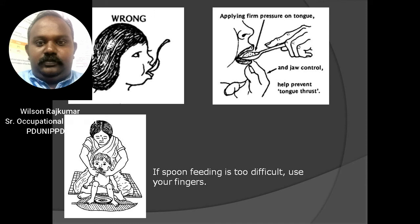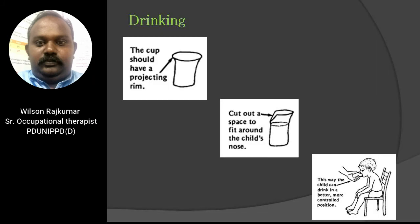Feeding a child from above leads to tongue thrust. Applying firm pressure on the tongue and using jaw control helps prevent tongue thrust. If spoon feeding is too difficult, use fingers to feed the child. To promote drinking, select a cup with a projecting rim and cut out a space on the opposite side to fit around the child's nose when lifting the cup. Position the child in a sitting position with the trunk slightly forward for more controlled drinking.